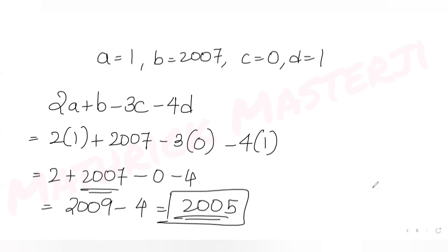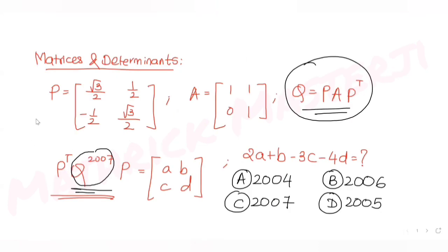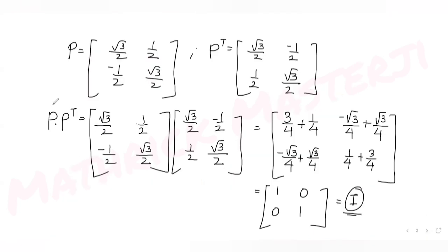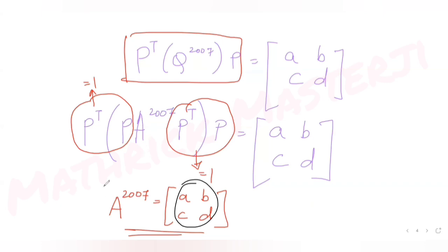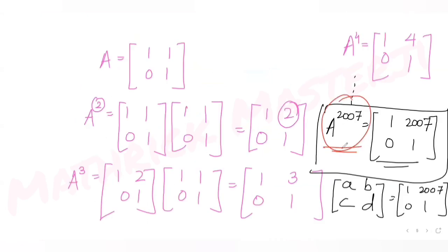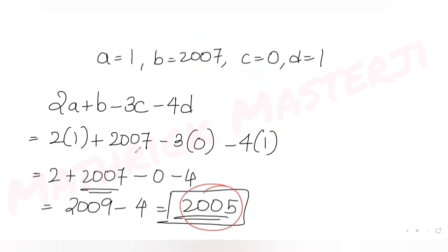The answer is 2005, which matches answer choice D. To summarize: we showed P·Pᵀ = Pᵀ·P = I, used Q = PAP^T to find Q^2007 = P·A^2007·Pᵀ, applied the given condition to get A^2007 = [a,b;c,d], found the pattern for A^n, and computed the expression to get 2005.